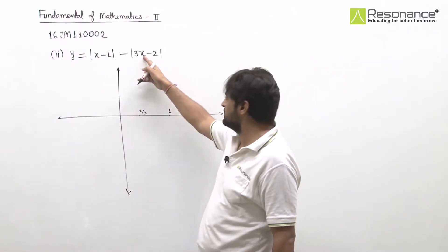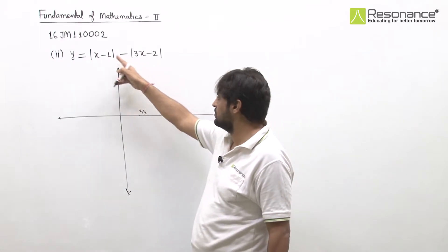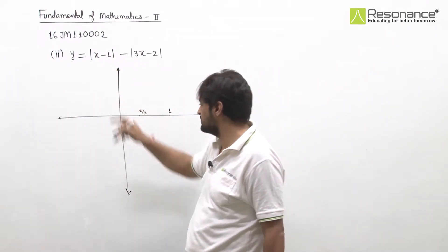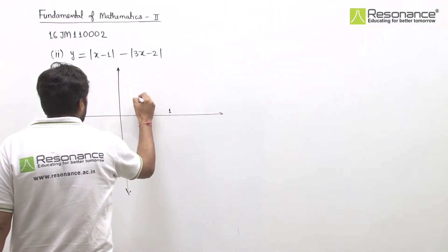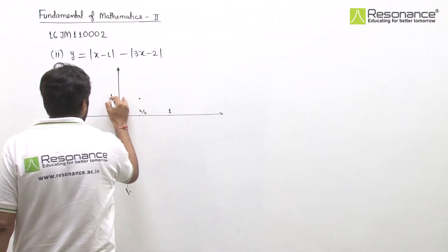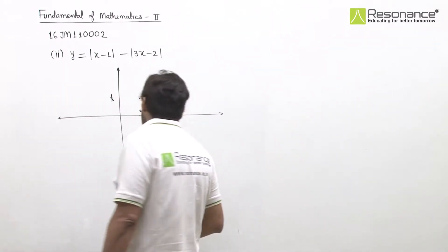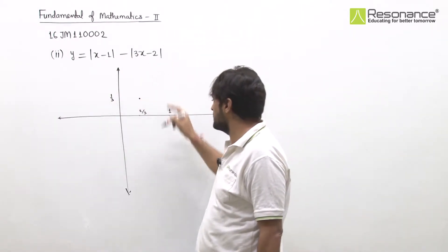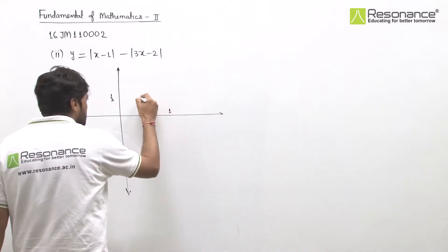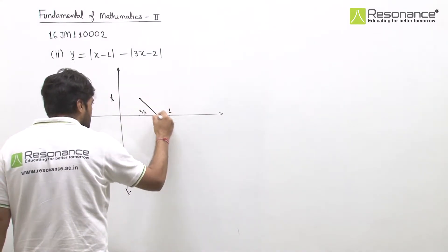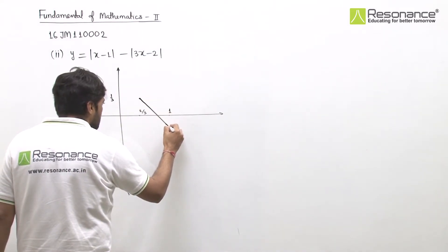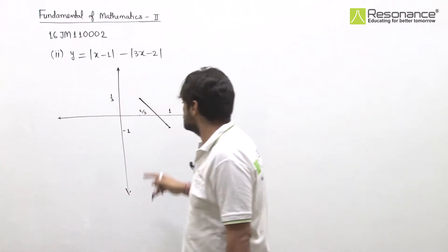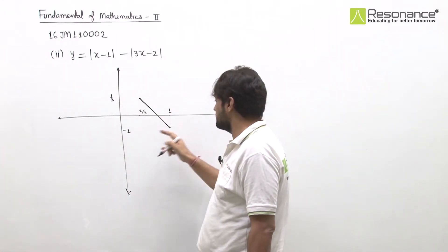Checking values at these points: at x = 2/3, the second term becomes 0 and the first term gives mod of (2/3 minus 1) = mod of minus 1/3 = 1/3. So at x = 2/3, the value is 1/3. At x = 1, the first term is 0 and the second becomes mod of (3 minus 2) = 1, so value is minus 1.